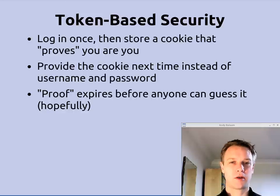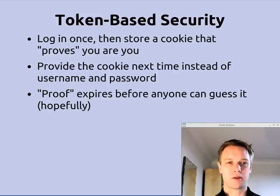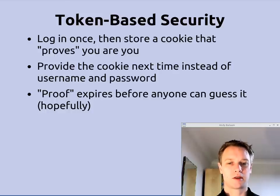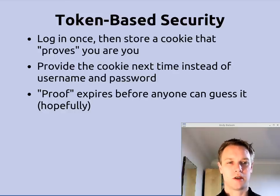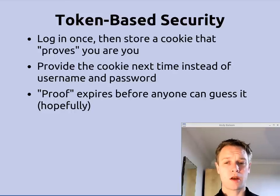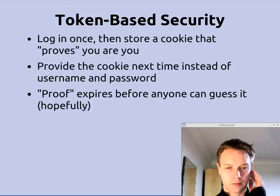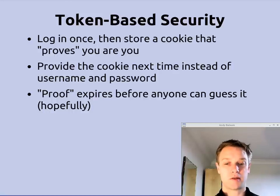Today we're going to try and add token-based security. So what is token-based security? With the security we've implemented so far, every request you make to the API includes your username and password. With token-based security, you make a request using your username and password, and as a result of that request a cookie is stored on the client machine which acts as proof that you are who you say you are — that you have supplied the username and password in some previous request. So next time you make a request, you provide the cookie instead of the username and password, and that proves who you are to the server. This proof is basically a hard-to-guess number or string, and part of that being hard-to-guess is that it needs to expire at some point.